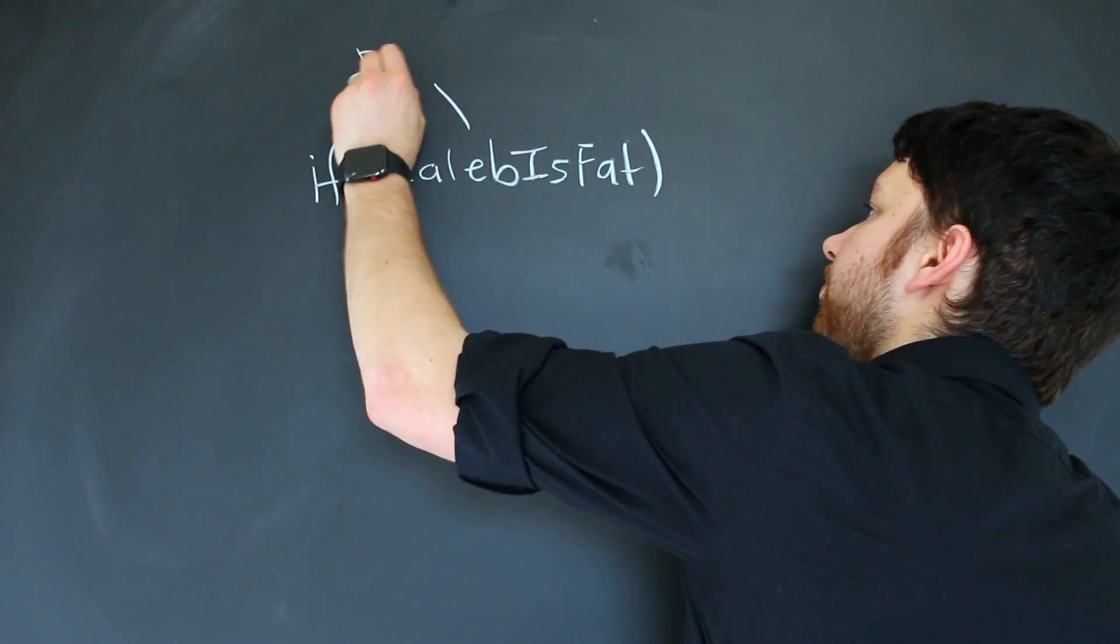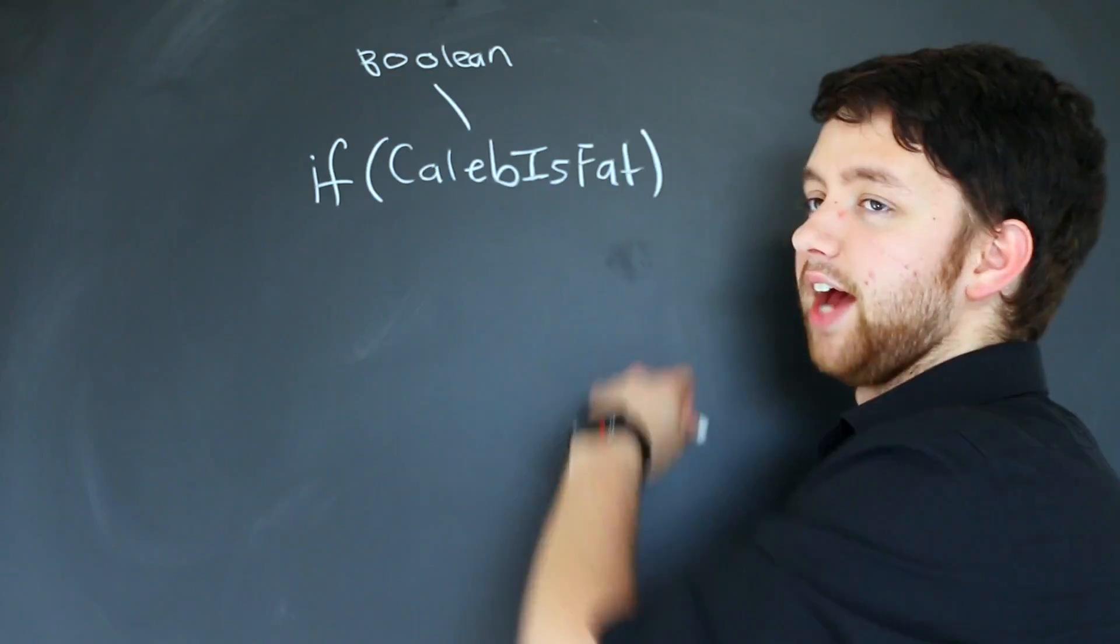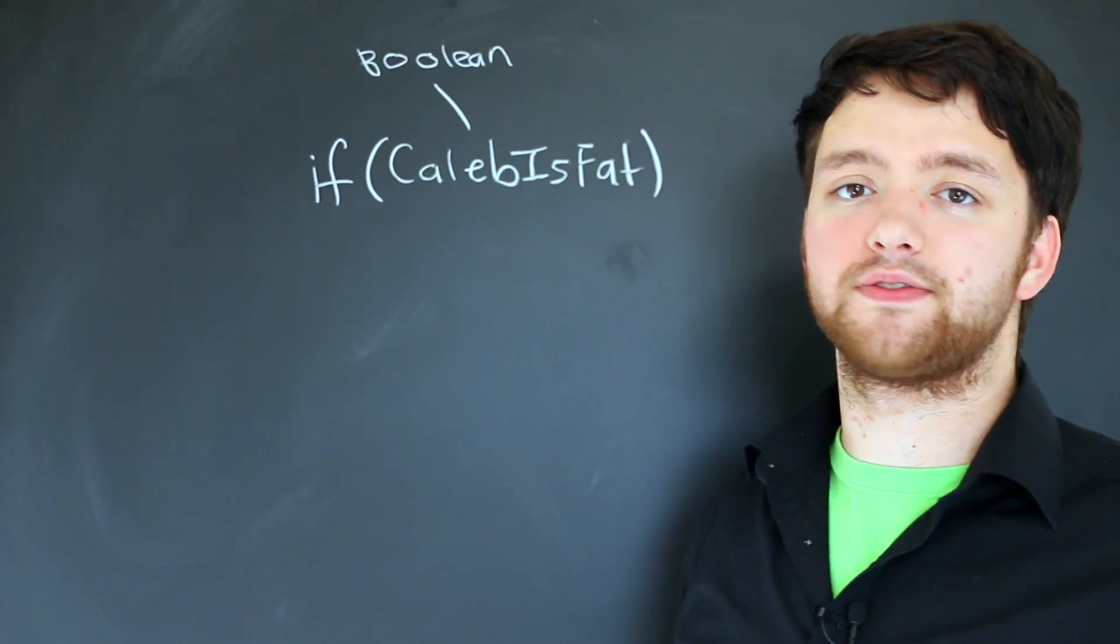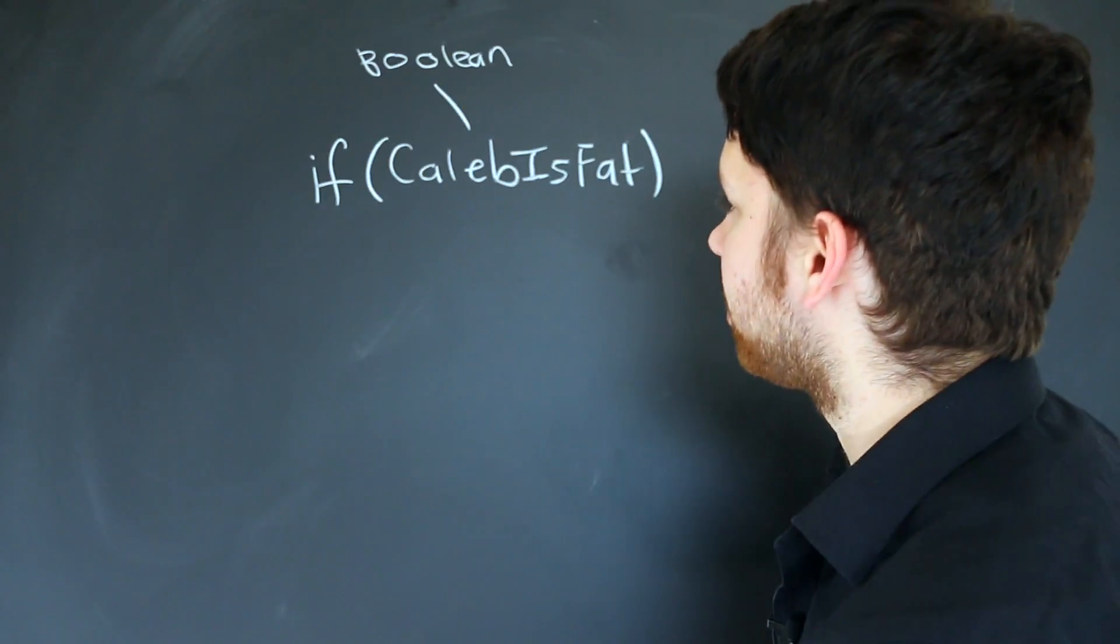Because this is a boolean variable, we don't have to do any kind of comparison. We don't have to say 'caleb is fat is true' or 'caleb is fat is false'. All I have to do is put that variable there.